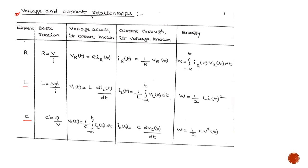Coming to the table description: in the first column I have listed the three elements — resistor, inductor, and capacitor. The second column gives the basic relationship — that is, the basic formula for how we can calculate resistance, inductance, or capacitance value. This basic relation is also a key parameter connecting two different sides of each element.